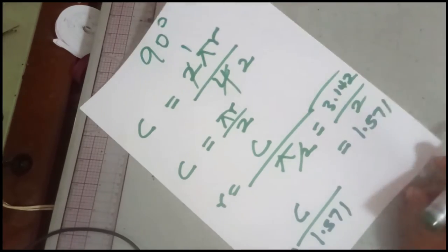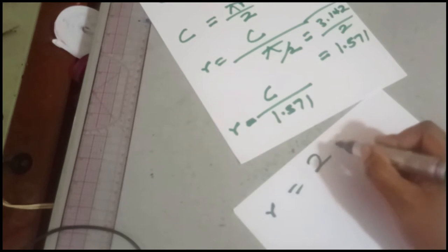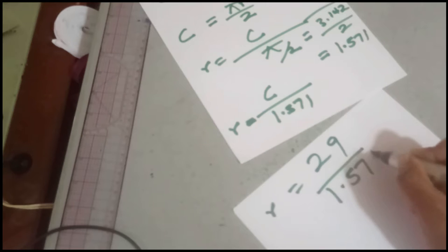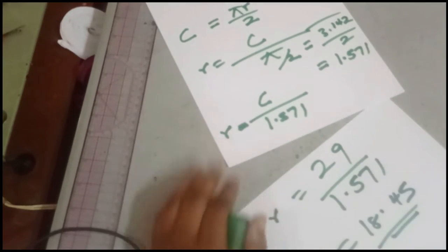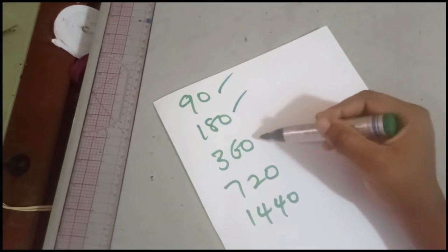For our tutorial with a circumference of 29 inches, 29 divided by 1.571 gives me around 18.45. So the radius for a 90 degree flare is 18.45. We've now taken care of the 90 degree, 180 degree, and 360 degree flares.